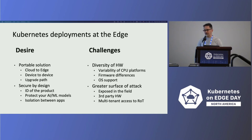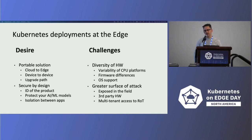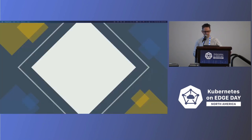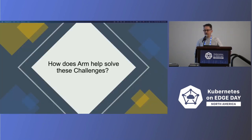There are challenges when you think about these two goals. Diversity of hardware is a big one, seen on many fronts — the diversity of CPUs, the fact that firmware could be different, OSes can be different, and that can slow down development. When you're thinking about a Kubernetes deployment, these constructs sit below your deployment but they're quite important. I'm going to talk about what ARM is doing to help bridge those gaps and the tools we're putting into the market to help developers overcome these challenges at the edge.